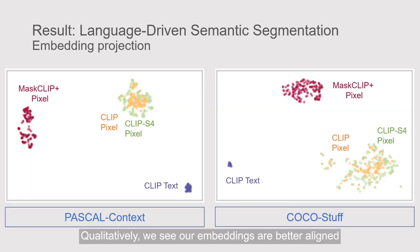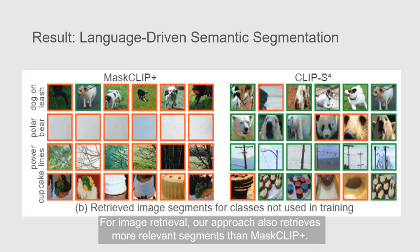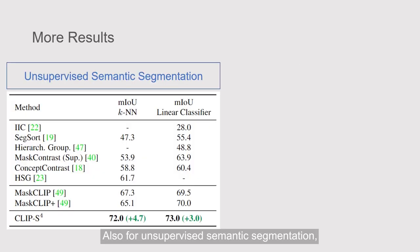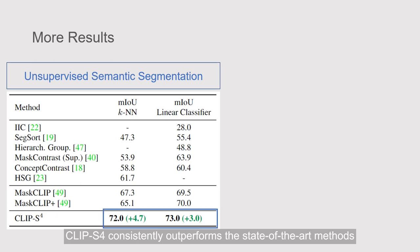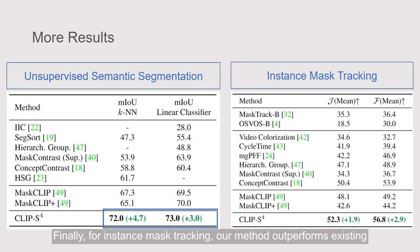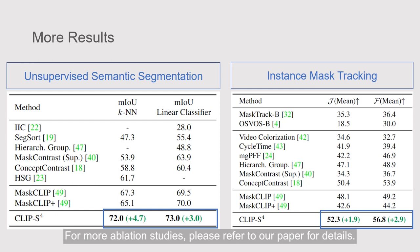Qualitatively, we see our embeddings are better aligned with CLIP than MaskCLIP+'s embeddings. For image retrieval, our approach also retrieves more relevant segments than MaskCLIP+. For unsupervised semantic segmentation, CLIP-S4 consistently outperforms the state-of-the-art methods on both k-nearest-neighbor search and linear classification. Finally, for instance mask tracking, our method outperforms existing supervised, unsupervised, and language-guided approaches on both metrics.